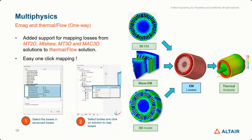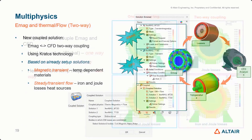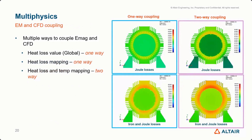About multiphysics, the main feature regards the coupling between EMAC and Thermal. In the one-way process, losses can be easily mapped from the EMAC solution to the Thermal solution within the same model. The two-way coupling is also now available between EMAC and Thermal, allowing better accuracy of temperature without needing scripts or model changes — everything done in the same SimLab model. We can compare results using the three methods considering Joule and iron losses, with the two-way coupling enabling identification and display of hot spots with better accuracy.